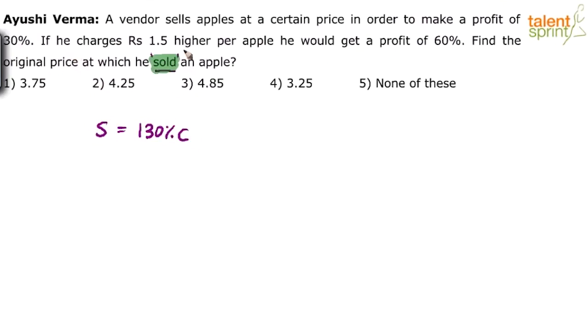If he charges 1.5 higher per apple, he would have got a profit of 60%. Which means if S becomes S plus 1.5, he would have made a profit of 60%. If the profit is 60%, then the selling price is 160% of the cost price. So S plus 1.5 is 160% of the cost price.